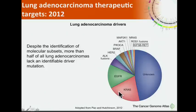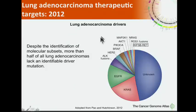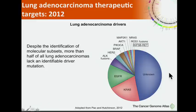This has led to the definition of a large number of potential therapeutic targets, including KRAS mutations, EGFR alterations, ALK fusions, ERBB2 mutations, ROS1 fusions, and the KIF5B-RET fusion reported by numerous groups earlier this year. But it also tells us that the leading driver in many lung adenocarcinomas remains unknown and still needs to be uncovered, and this is one of the major goals of our TCGA effort.